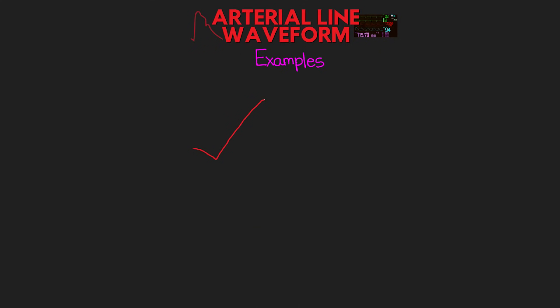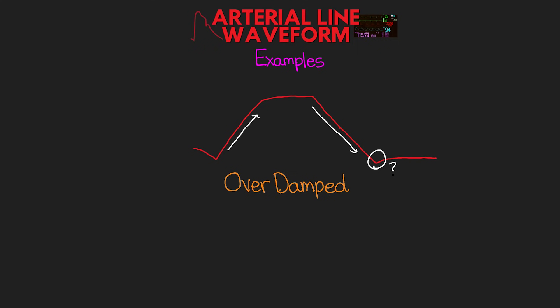One last example. Here again we do a square wave test — what would this be? Hopefully you saw that slower upstroke, a long exaggerated downstroke with no oscillation at the end. This would be an indication of overdamped. Knowing this, what would you expect to see for your patient's arterial blood pressure tracing? This should tell you that there is a loss of energy in the system. Therefore, you are going to see a flatter waveform, giving us a lower systolic and possibly a higher diastolic blood pressure.